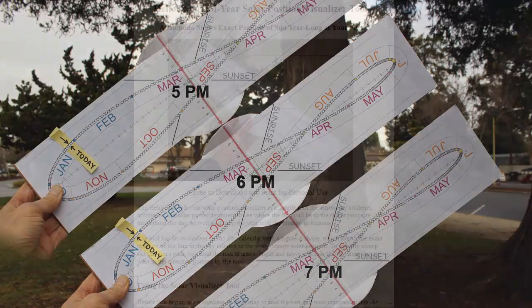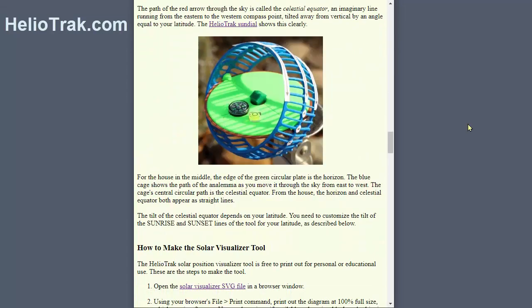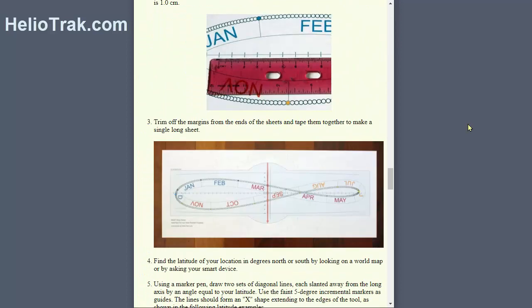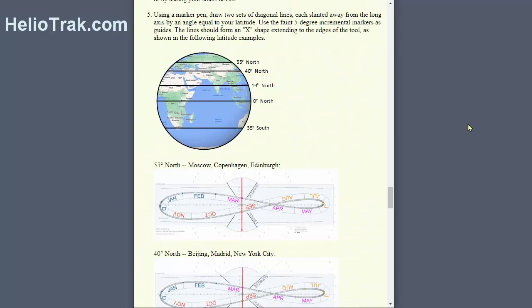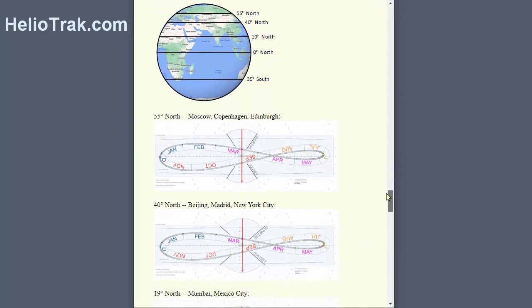To get this tool for free, go to heliotrack.com, where you'll find instructions for printing and assembling it, and for customizing the sunrise and sunset lines for your geographic latitude.